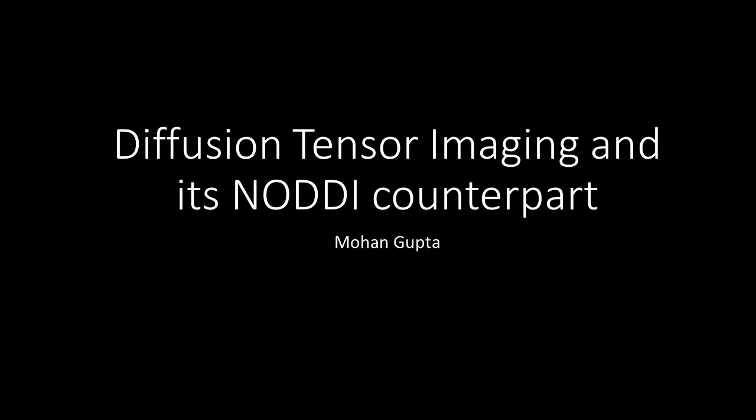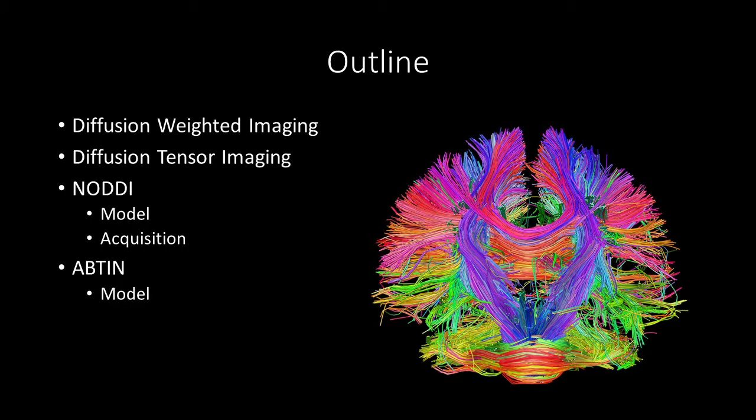It's NeuroMo, and this time we'll be discussing how to analyze multi-shell diffusion-weighted imaging, also known as DWI, through a typical diffusion tensor imaging model and a more recent compartmental model called NODDI. I'm first going to discuss some of the physics behind DWI and how the data is gathered. Then I'll talk about the model of DTI and do a brief walkthrough of how to analyze DWI data with this model.